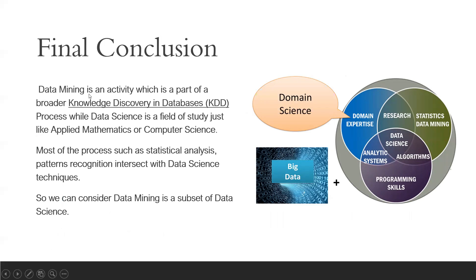In conclusion, data mining is an activity which is part of the broader knowledge discovery in databases process, while data science is a field of study — just like mathematics, applied mathematics, or computer science. Most processes such as statistical analysis and pattern recognition intersect with data science techniques. As you can see in the diagram, data mining is a subset of data science and is used in machine learning algorithms for finding patterns, but there is a minor difference between them.